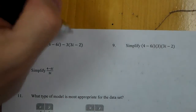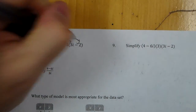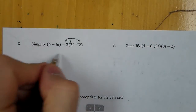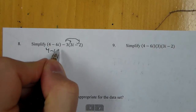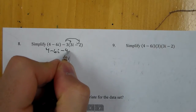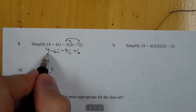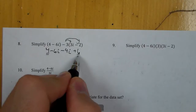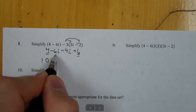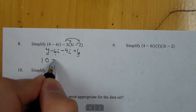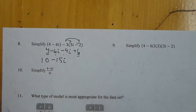For number 8, the first thing we're going to do is distribute this negative 3 into our terms. We get 4 minus 6i minus 9i plus 6. Then we combine the real numbers: 4 and 6 give us 10, and negative 6i and negative 9i is negative 15i.